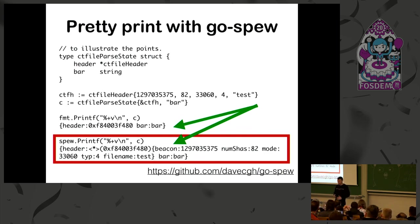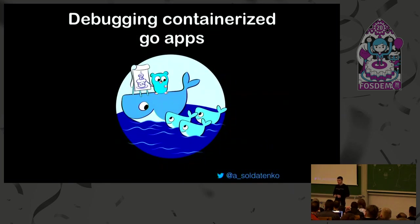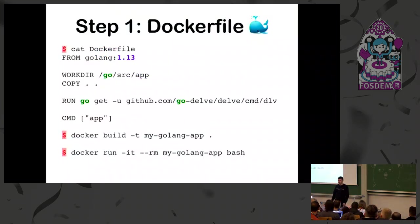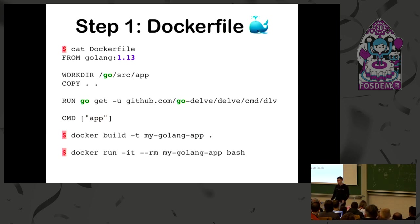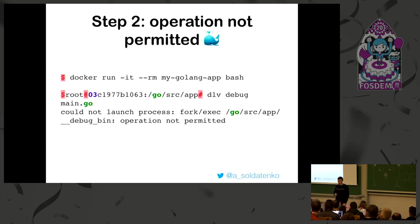The next part of my topic - I will try to show you a small demo. Every day we use containers, Kubernetes, all this stuff, and sometimes it's tricky to debug it. Usually you have a simple Dockerfile with Go - you copy source code. I have one where I additionally installed Delve - not for production. I build it and run it, running bash and then trying to run my debugger inside Docker.